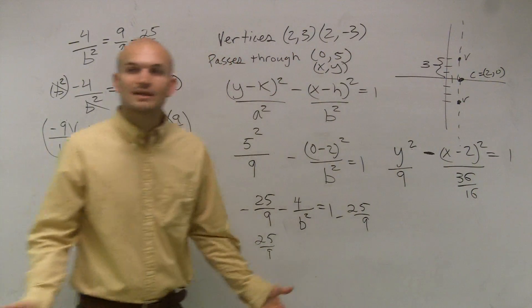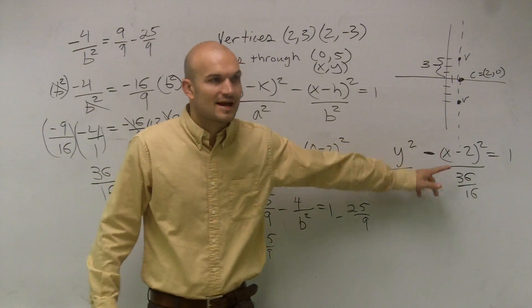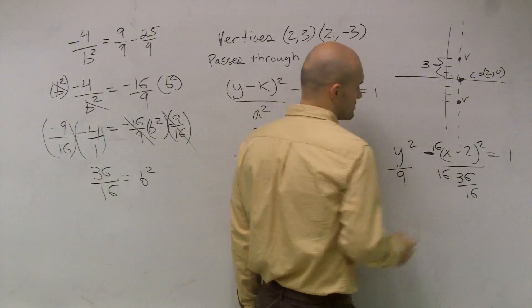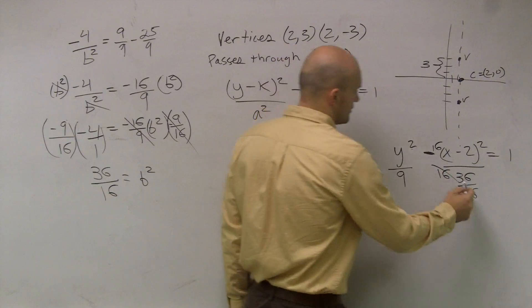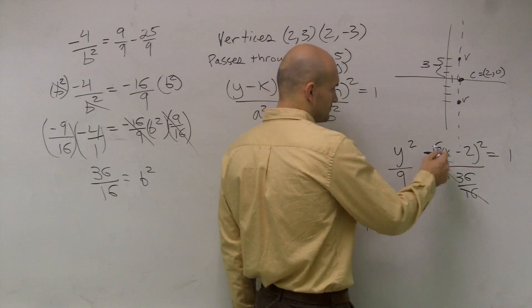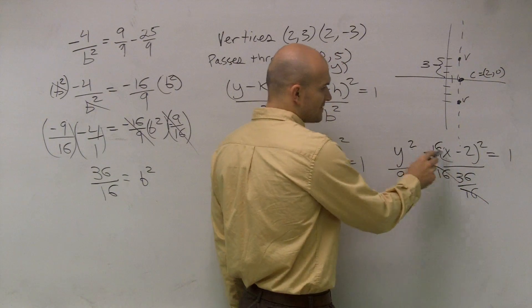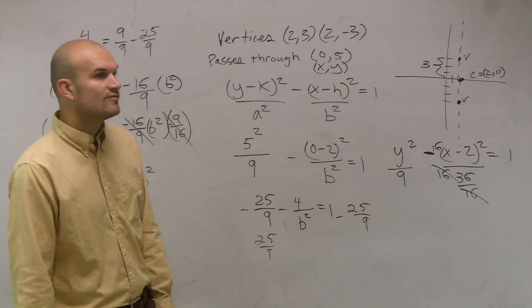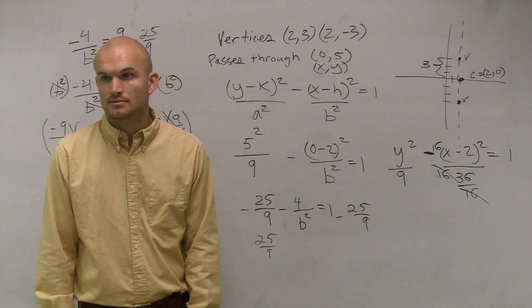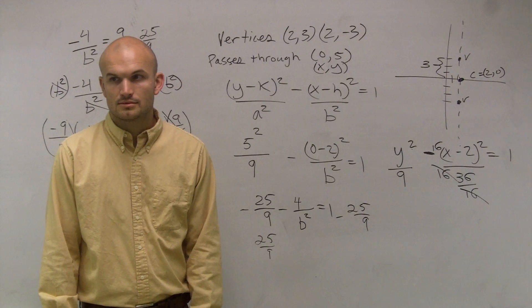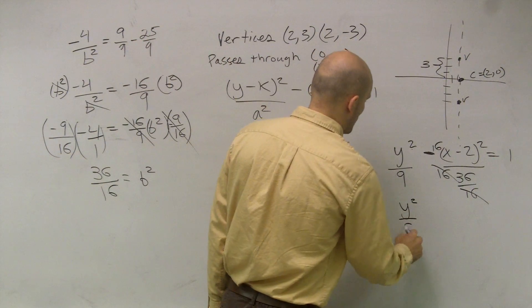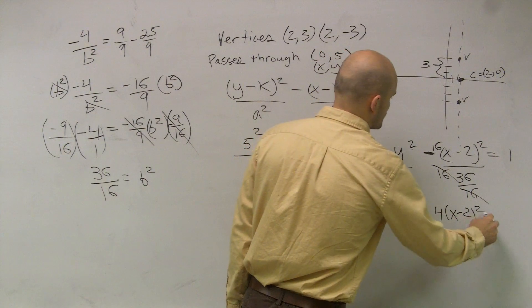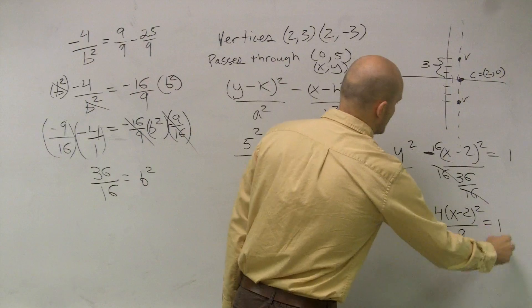And our b we figured out was 36 over 16. But remember, just like we did the last problem, you can't have your fraction divided by a fraction. So we'll multiply by 16 over 16, right? Those cancel out. And then I have 16 over 36, which I can divide by 4 to give me 4 ninths.